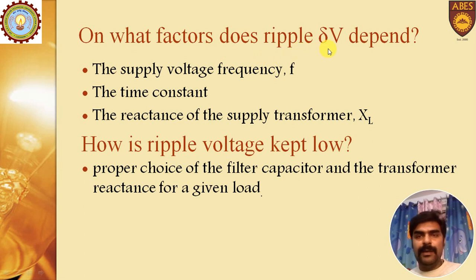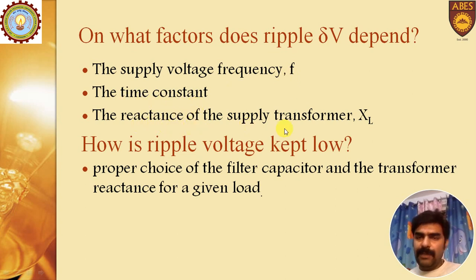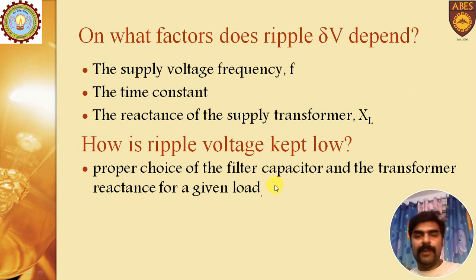The next question is: on what factors does ripple voltage ΔV depend? The ripple depends on the supply voltage frequency, on the time constant, and on the reactance of the supply transformer. To keep the ripple low, proper choice of filter capacitor and transformer reactance is important.